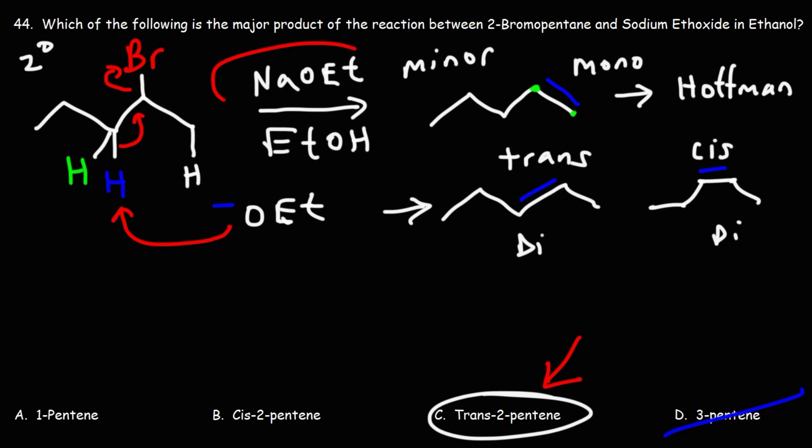If you use a strong, unhindered base, the major product is going to be the Zaitsev product. If you use a bulky base, a strong, hindered bulky base, typically the Hofmann product will be the major product.